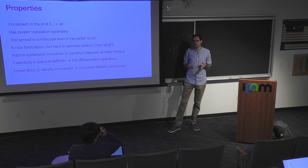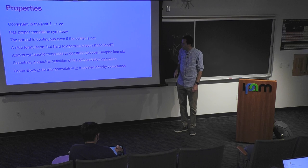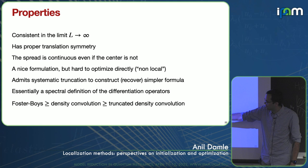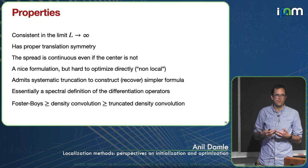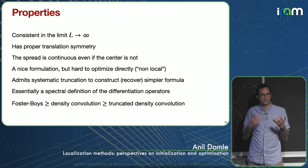Properties of this definition: it's consistent in the limit as L goes to infinity — a sensible definition as cell size grows. It has proper translation symmetry: if you translate a density, the center moves with it. The spread is always continuous even if the center is not. One limitation is that it's non-local — a spectral kind of definition rather than a first-order finite difference — which makes it a little hard to optimize directly. That's still work in progress. What we've been doing is systematically truncating the formula to get increasingly local definitions of spread, getting something a little different from Marzari-Vanderbilt but with very nice optimization properties.